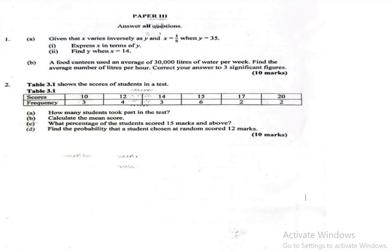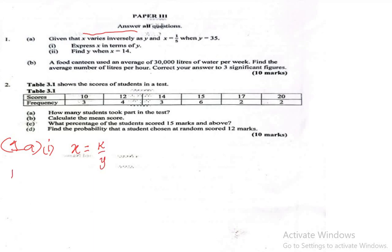Let's take a look at the first question. Question 1a says: given that x varies inversely as y, and x equals 1/5 when y equals 35, express x in terms of y. To solve this question, let's interpret what has been said. x varies inversely as y, so x is equal to k over y. The k here stands for the constant, which we don't know. In the question we are told that x equals 1/5 and y equals 35.